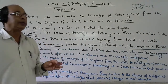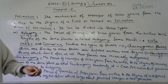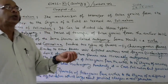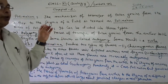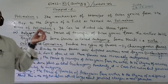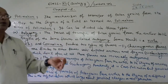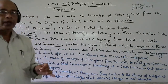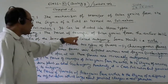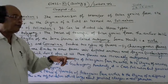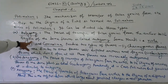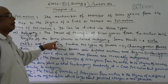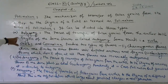Within the same flower you will find the stamen and the pistil. The pollen grains come off from the anther of the same flower and transfer to the stigma of the same flower. This process is known as autogamy.